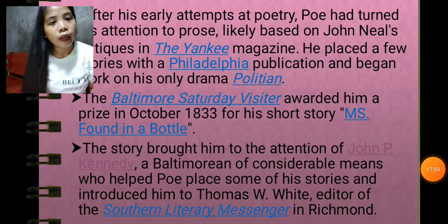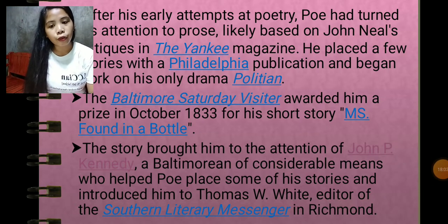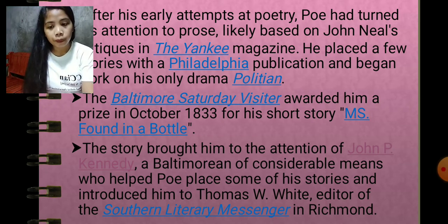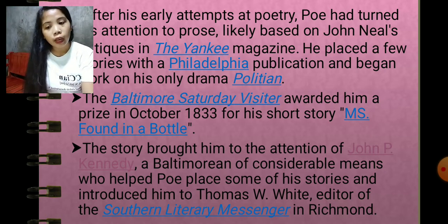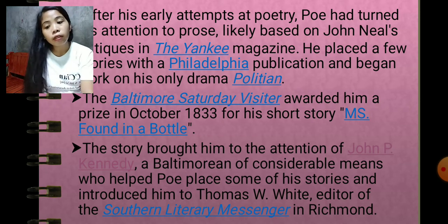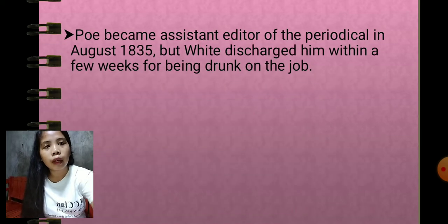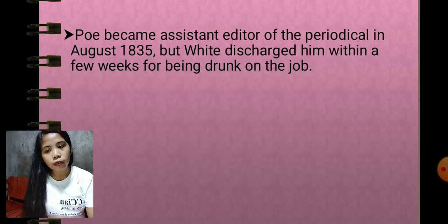The story brought Poe to the attention of John P. Kennedy, a Baltimorean of considerable means, who helped Poe place some of his stories and introduced him to Thomas W. White, editor of the Southern Literary Messenger in Richmond. Poe became assistant editor of the periodical in August 1835, but White discharged him within a few weeks for being drunk on the job.